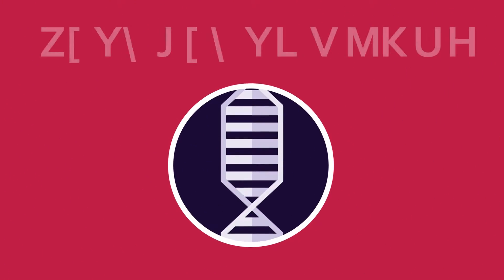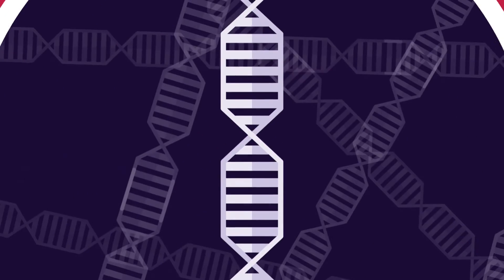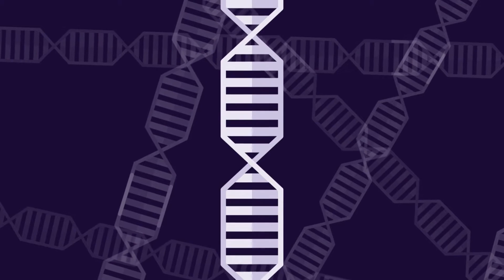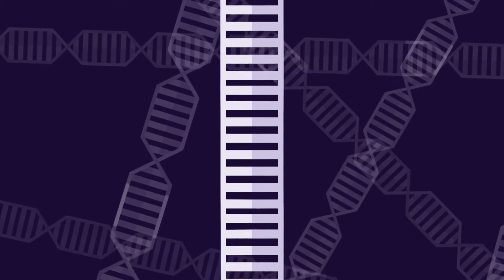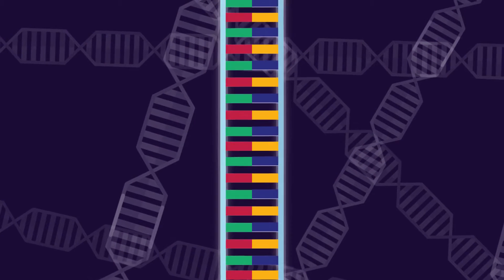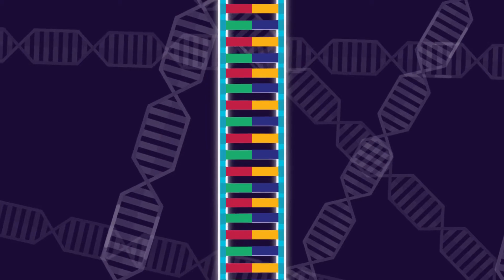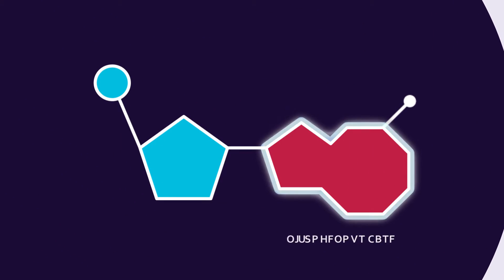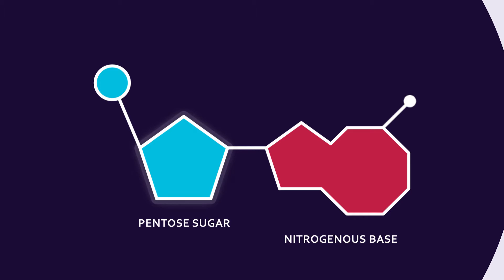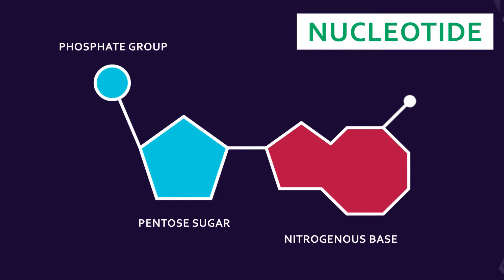Now let's talk about the structure of DNA. Think of DNA structure as a ladder whose rungs are made up of different bases and sides as sugar phosphate. Each composition of this nitrogenous base, pentose sugar, and phosphate group is called a nucleotide.